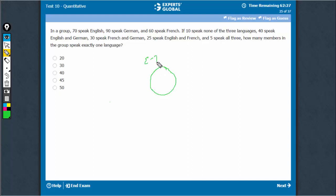So English 70, German is 90, and French is 60. 10 speak none of the three languages, 10 comes out. 40 speak English and German.